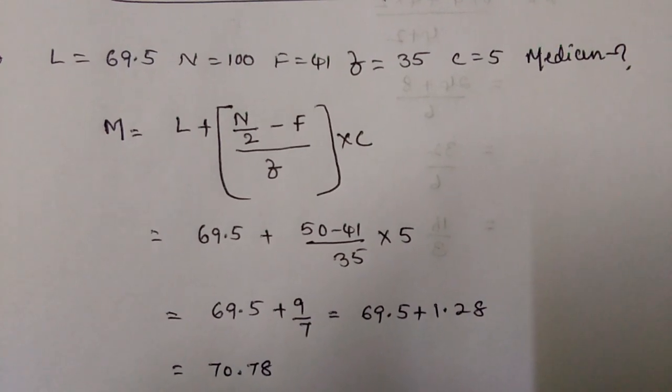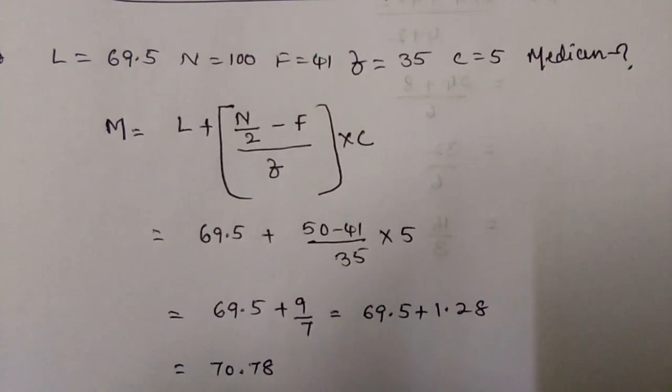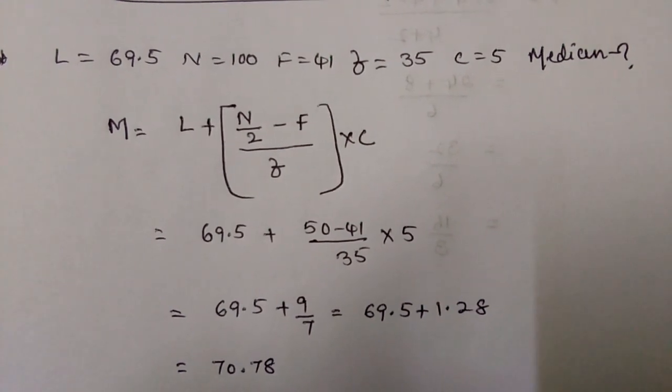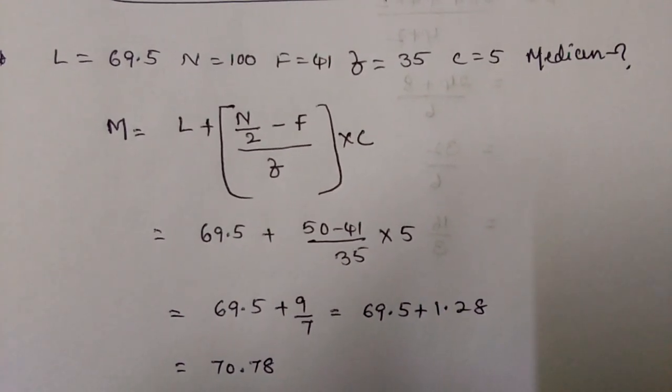7 times 5 is 35, then 50 minus 41 is 9, then 9 by 7, so 69.5 plus 1.28.